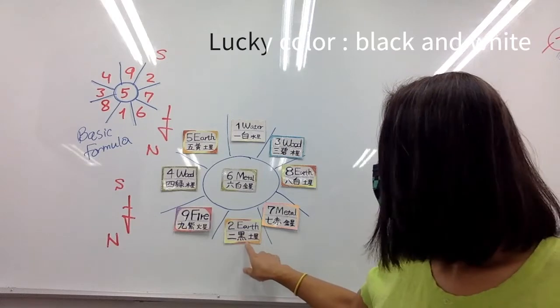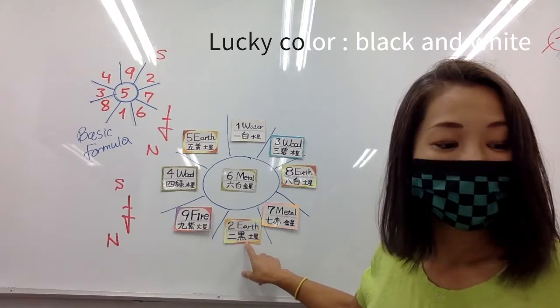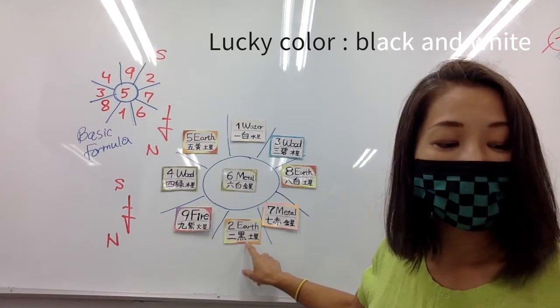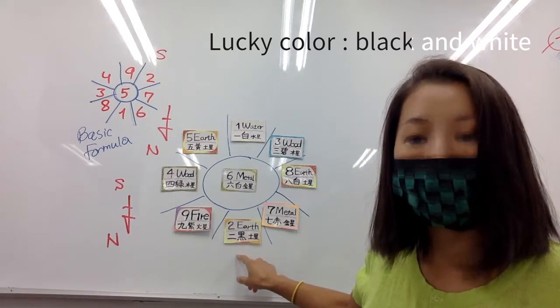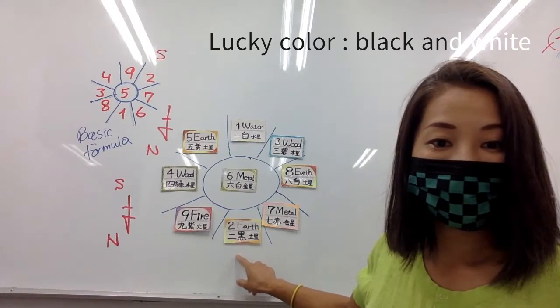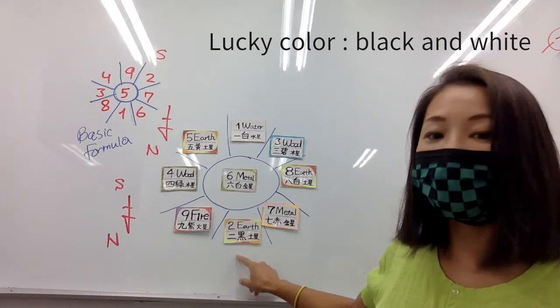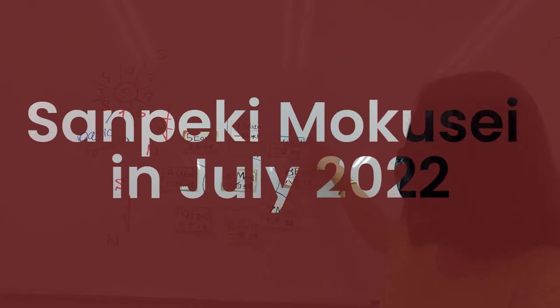Lucky color in July for Jikoku person is black and white.